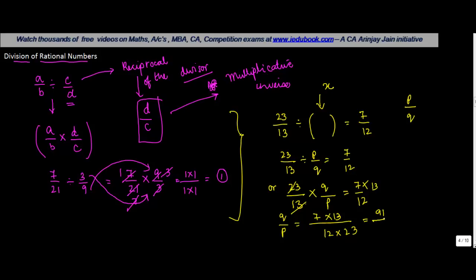So we calculate: 7 multiplied by 13 equals 91, and 12 multiplied by 23 equals 276. Therefore q upon p equals 91 upon 276. Reversing the order, p upon q equals 276 upon 91. That's how you do the division of one rational number by another.